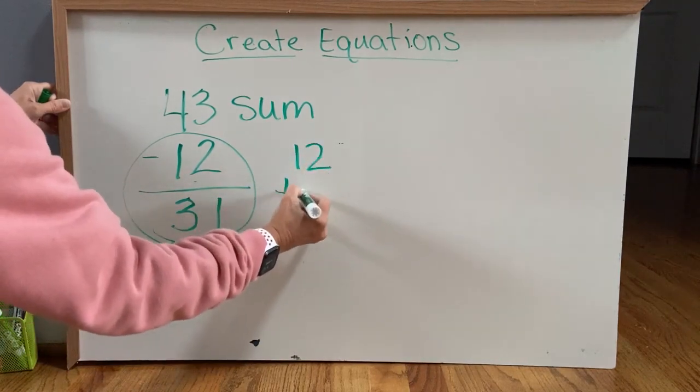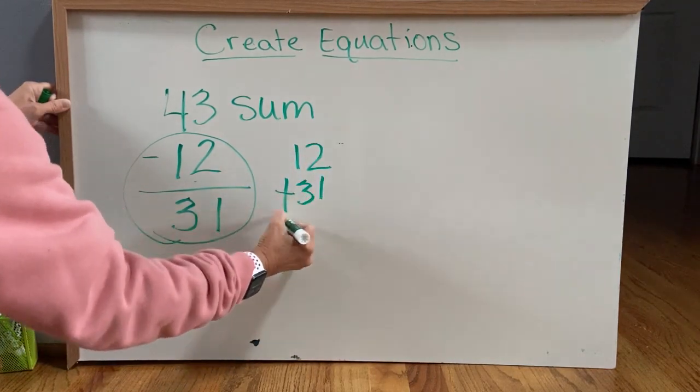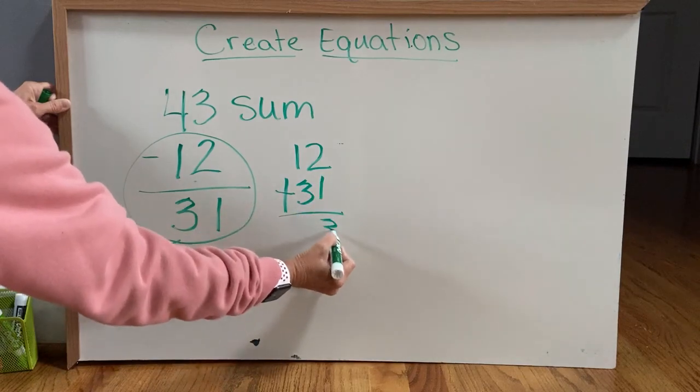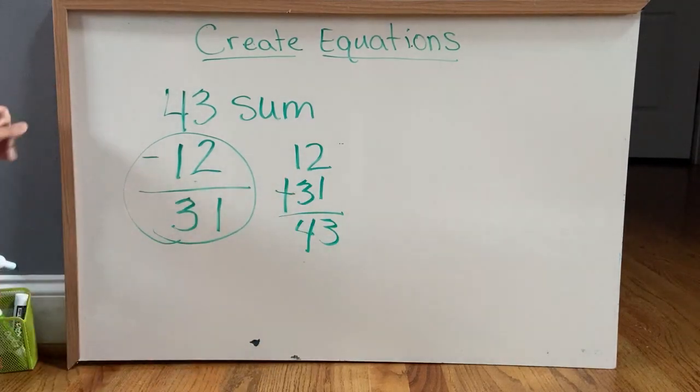12 plus 31, 2 plus 1 is 3, and 1 plus 3 is 4, okay?